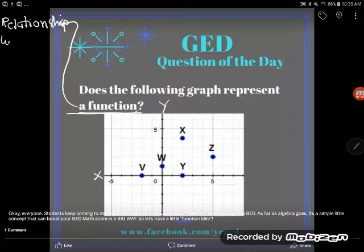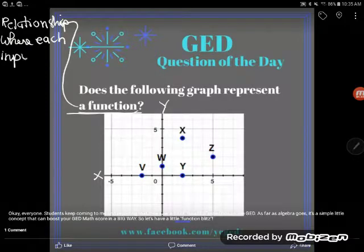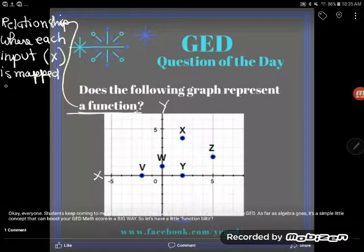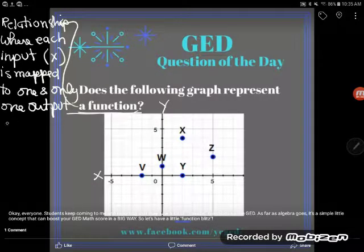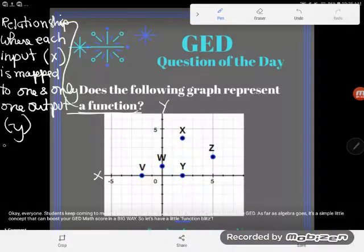A function is a relationship, but it's a special kind of relationship. It's a relationship where each input value, which we said was input, is mapped to one and only one output value. Our outputs were y, so what am I trying to say? Each x has only one y. That's it - each x you see should have only one y.